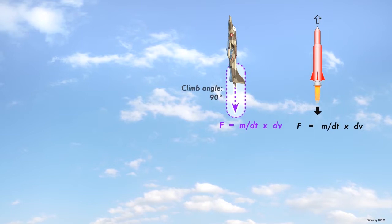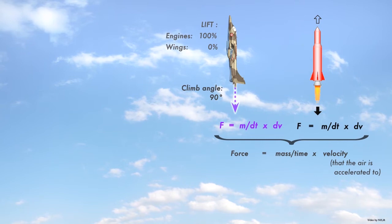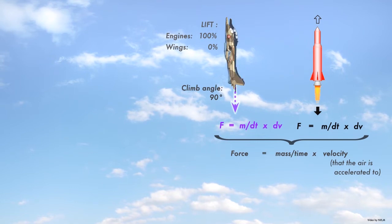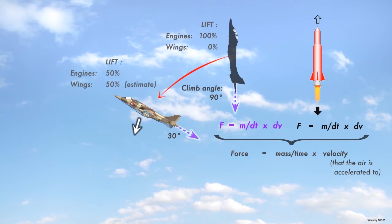Here, the force equals the mass of the exhaust gases displaced downwards each second times their velocity. This is the same equation used by a rocket. As the plane's angle of climb decreases, then the wings generate an increasing proportion of the lift.